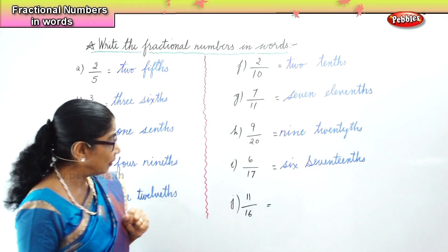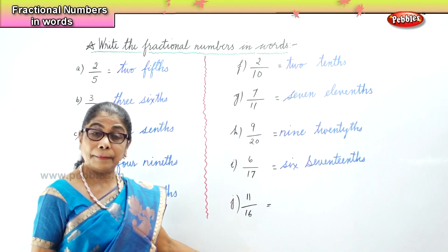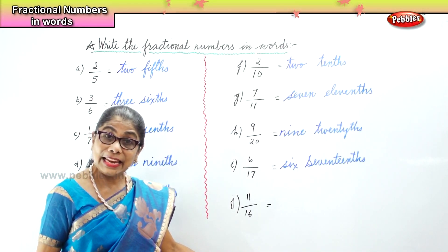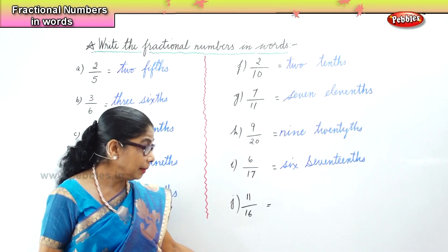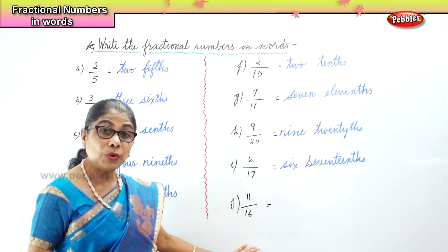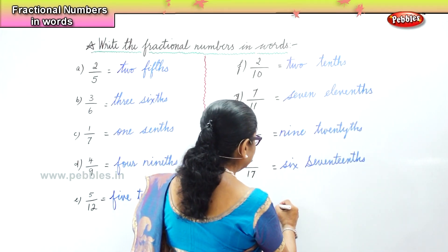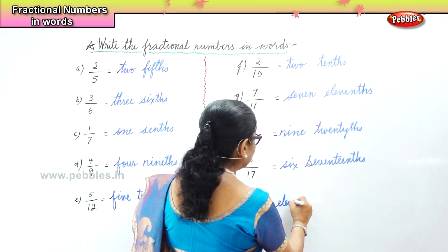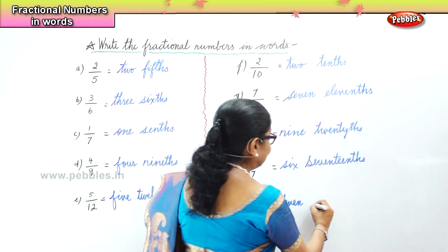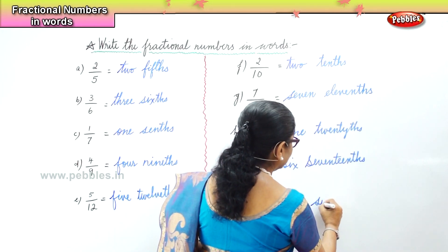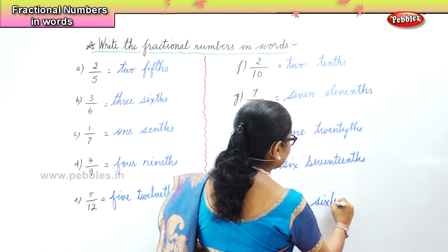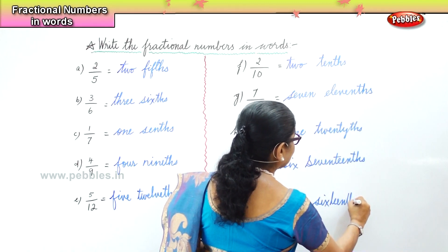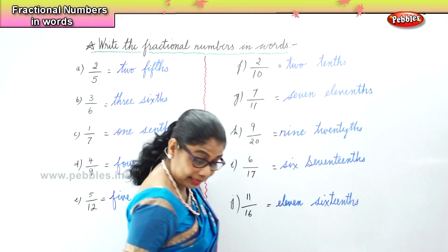Lastly, we have 11 by 16 — eleven parts out of sixteen parts. How will you write that? Eleven sixteenths.